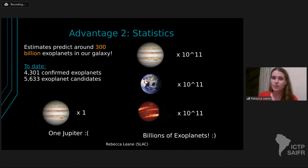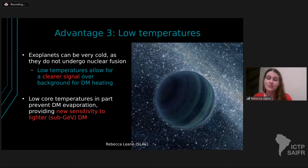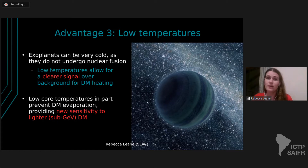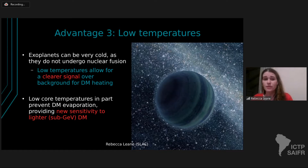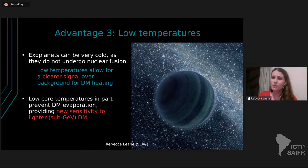The third advantage is the really low temperatures of exoplanets. They can be at very low temperatures because they do not undergo nuclear fusion — no fusing of hydrogen into helium like stars. These really low temperatures allow for a clearer signal over background for dark matter heating, letting dark matter heating take over as the dominant heat source. They also have very low core temperatures compared to something like our sun, which extends the dark matter evaporation limit further down in dark matter mass, giving sensitivity to much lighter sub-GeV dark matter candidates.